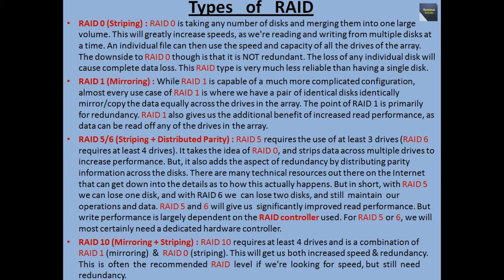Now we talk about types of RAID. First, RAID 0, which is striping. RAID 0 is taking any number of disks and merging them into one large volume. This will greatly increase speeds as we are reading and writing from multiple disks at a time. An individual file can then use the speed and capacity of all the drives in the array. The downside to RAID 0 is that it is not redundant — the loss of any individual disk will cause complete data loss. This RAID type is much less reliable than having a single disk.